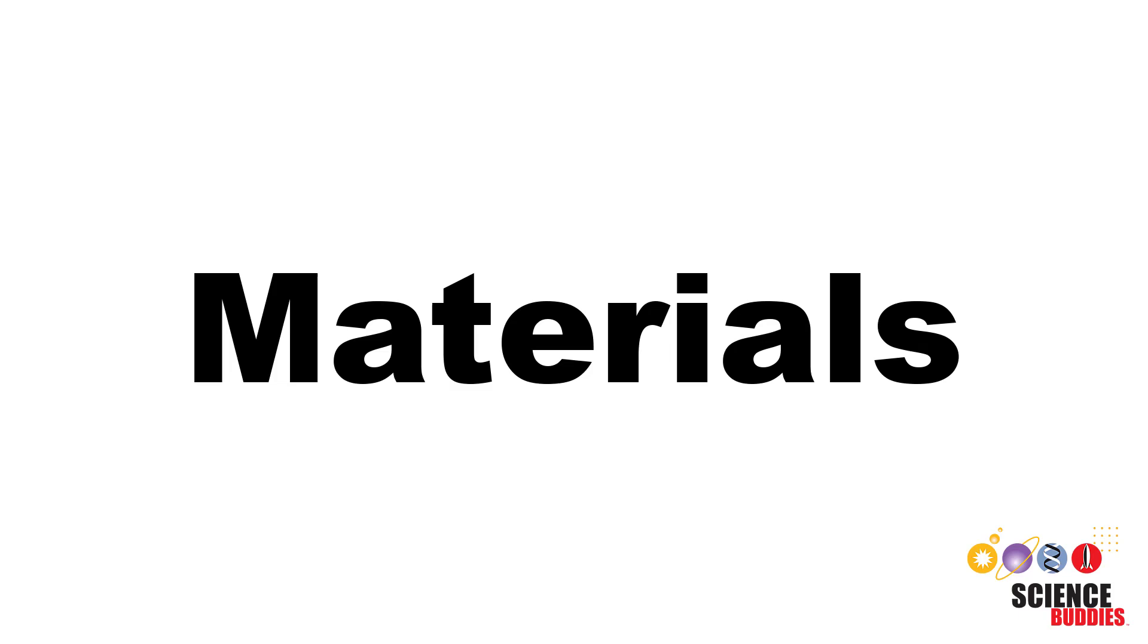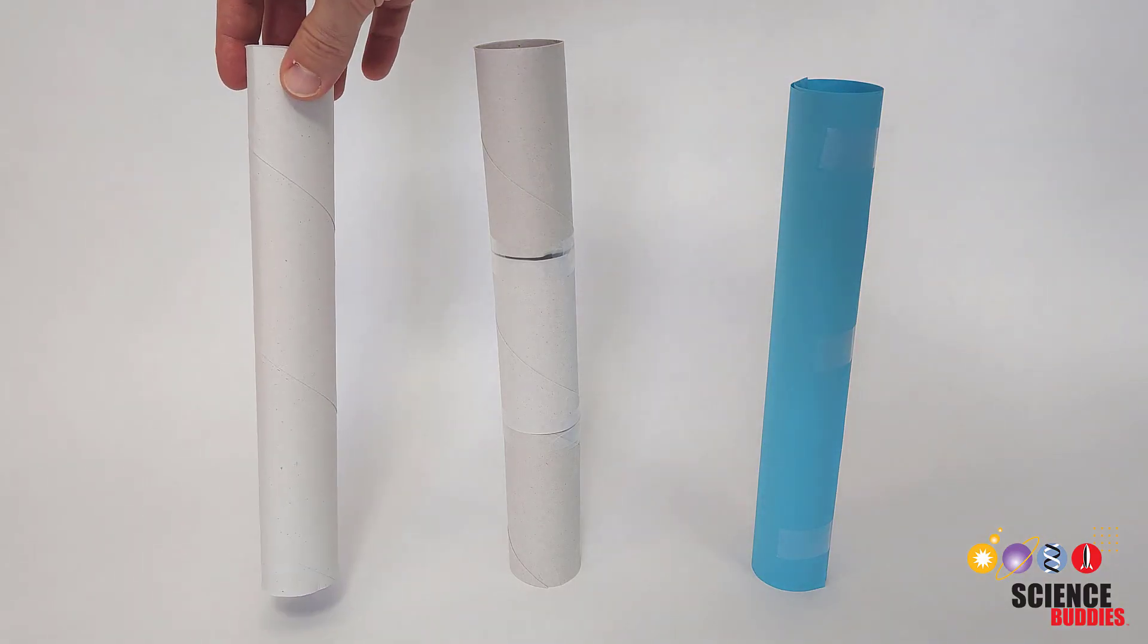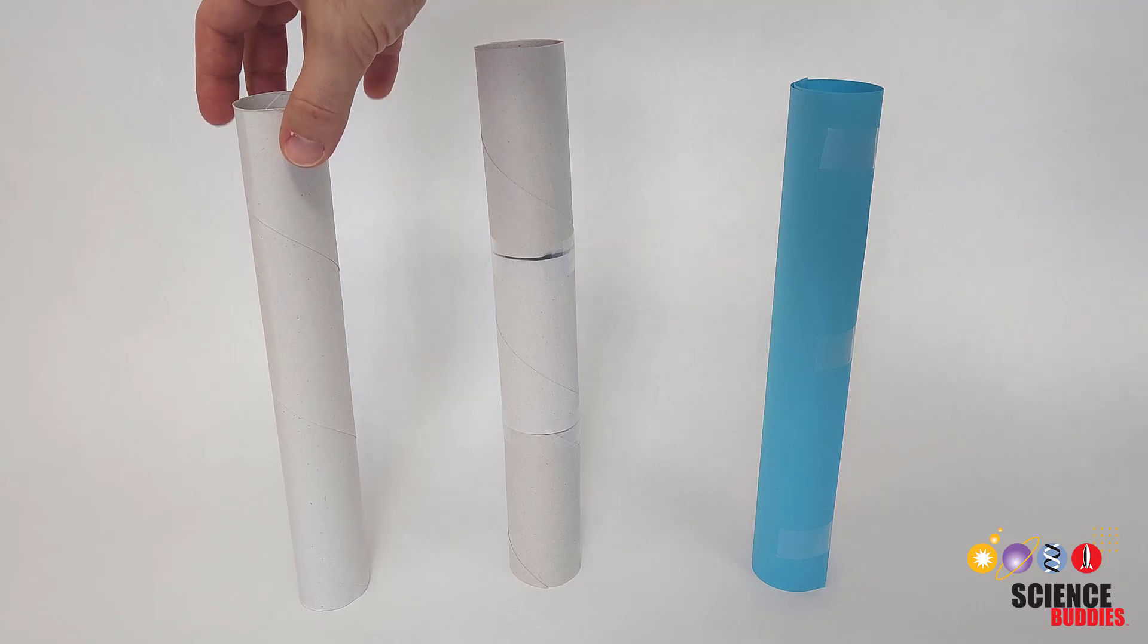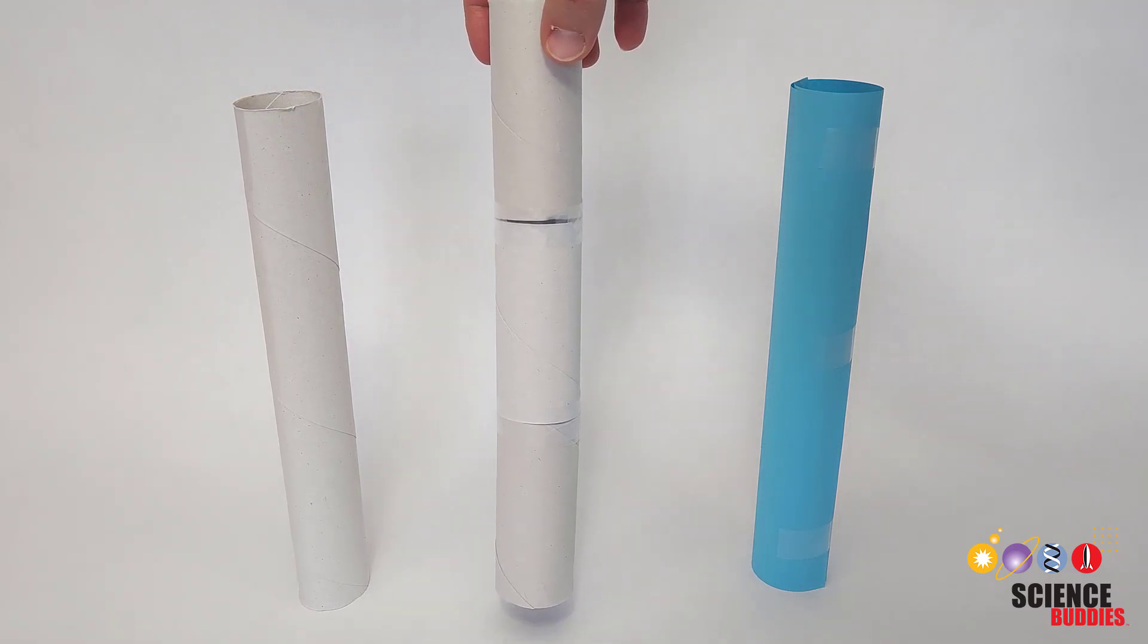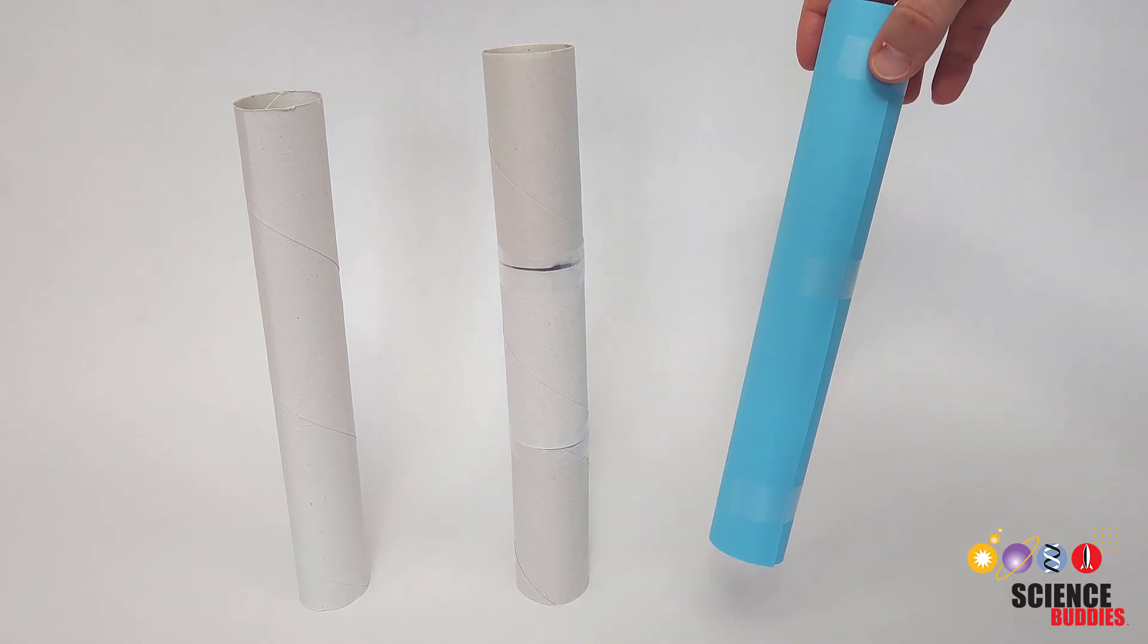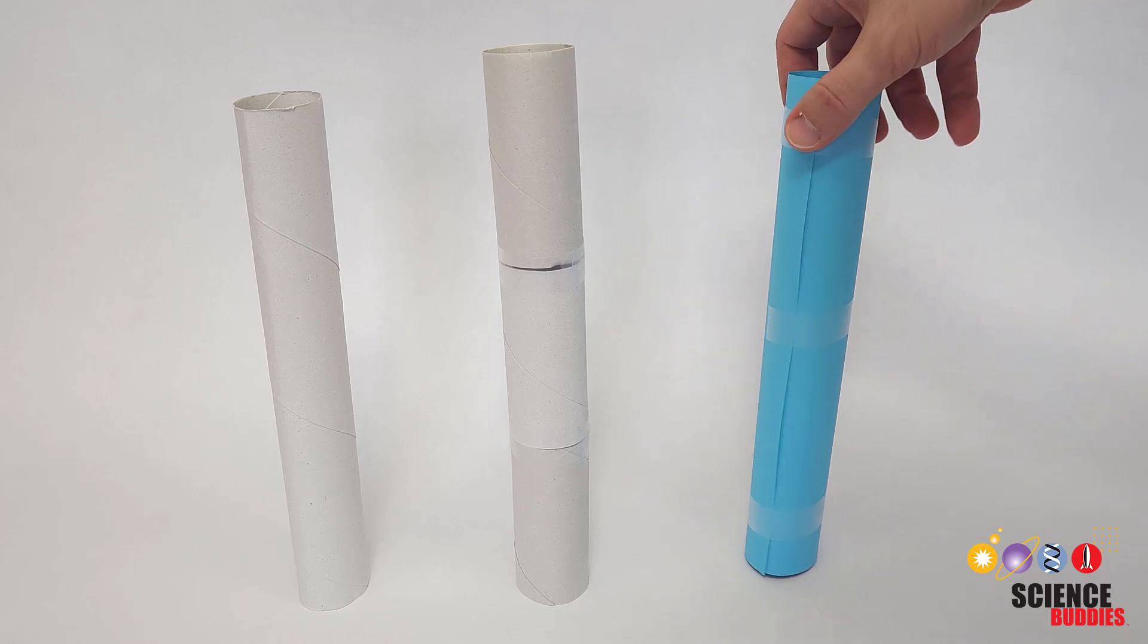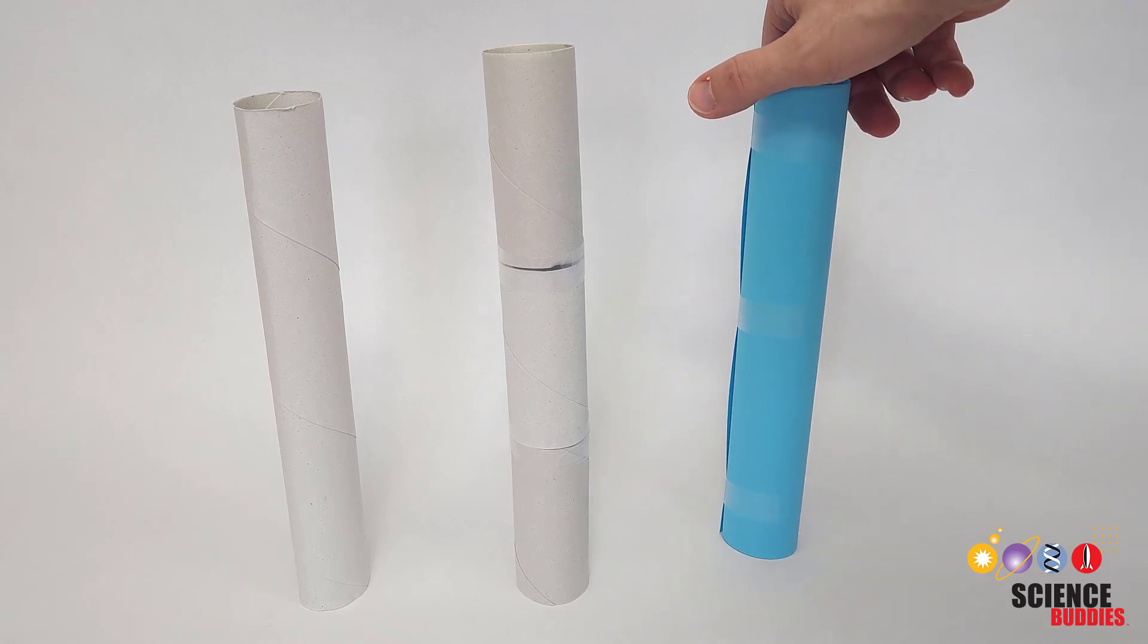First, let's talk about the materials. The standard rocket body must consist of a single cardboard paper towel tube, or three cardboard toilet paper tubes taped together end to end, or a single sheet of paper (printer, graph, construction, or notebook paper) rolled into a tube that is the same length and diameter as a cardboard paper towel tube.